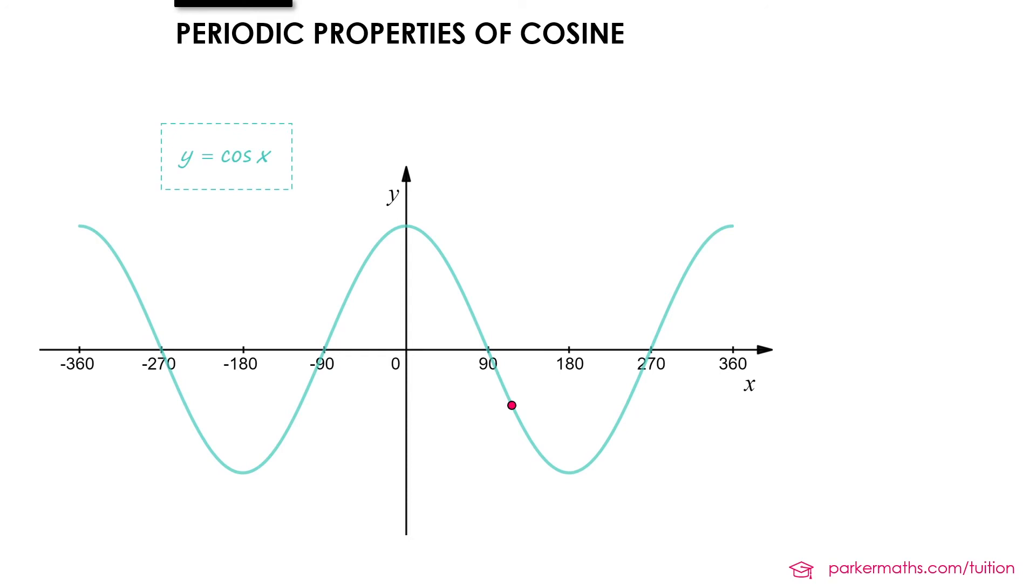This time let's go 360 in the negative x direction. We get to another point on the graph with the same y value and we could do that just like with the sine graph in either direction every 360 degrees.